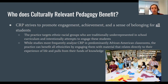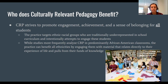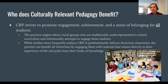Culturally relevant pedagogy strives to promote engagement, achievement, and a sense of belonging for all students, especially through representation in texts. In the traditional canon of literature, we see predominantly white ethnicity culture represented. CRP strives to represent those cultures that are less represented, targeting ethnic and racial groups who are traditionally underrepresented in school curriculum and intentionally attempting to engage these students. Most studies on CRP have targeted African-American groups, though recent studies are striving to generalize this more broadly across minorities.